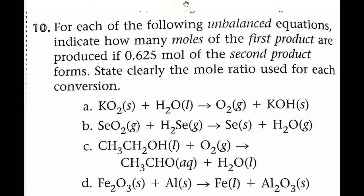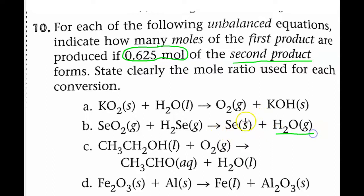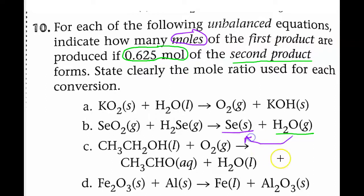We're going to do 10B. On all these questions, the given is going to be 0.0625 moles of whatever the second product is. Everything on the right side of the arrow are the products. This is the first product, this is the second product — so that's our given. The unknown is going to be the first product, so we're trying to go to moles of the first product.